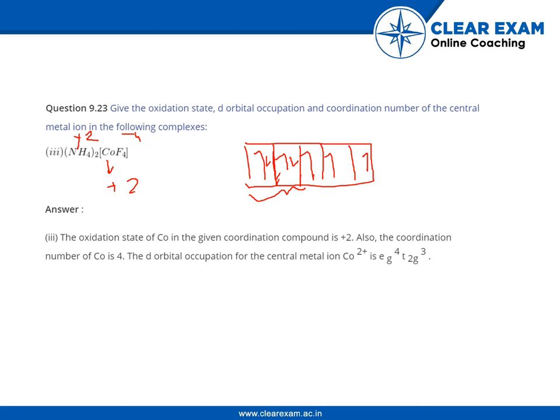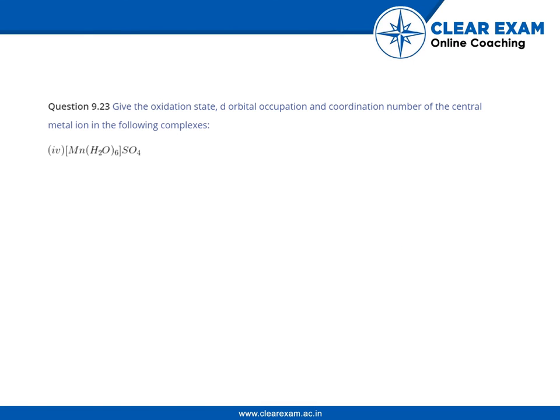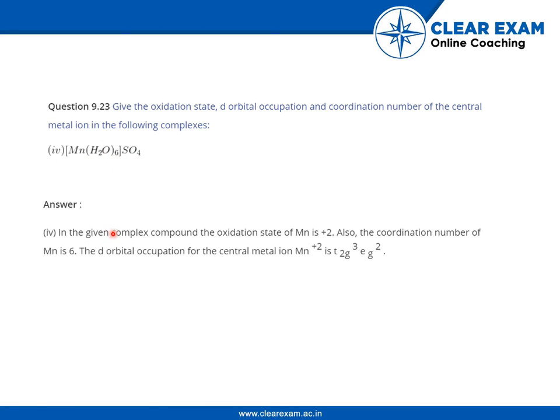Now [Mn(H2O)6]SO4. In the given complex compound, the oxidation state is plus 2, as SO4 is 2 minus. The coordination number is 6, and the d-orbital occupancy will be T2G3 EG2. Again you can see that there will be 3d5 configuration of Mn+2.